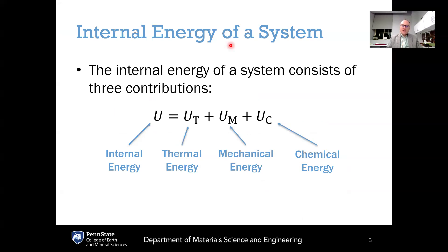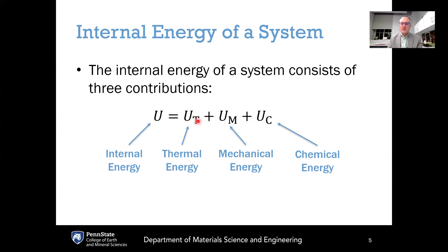Let's start with the concept of the internal energy of a system. If we have the internal energy of some thermodynamic system, we think of it as consisting of three different contributions. The internal energy U has three components: the thermal energy U_T, the mechanical energy U_M, and the chemical energy U_C. Adding these three contributions together gives you the total internal energy of the system.